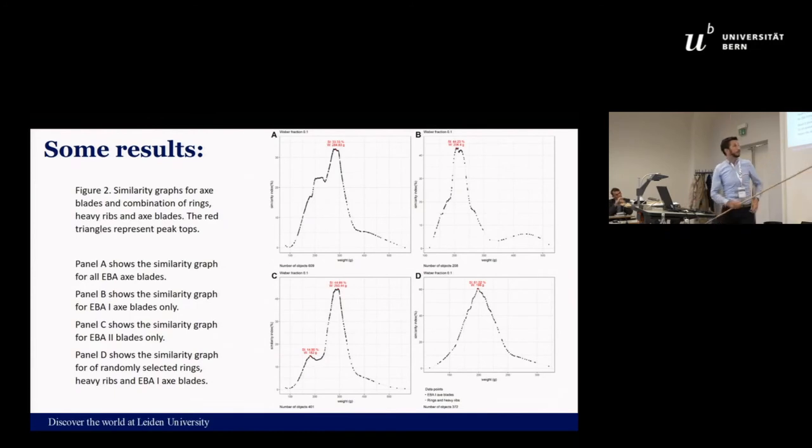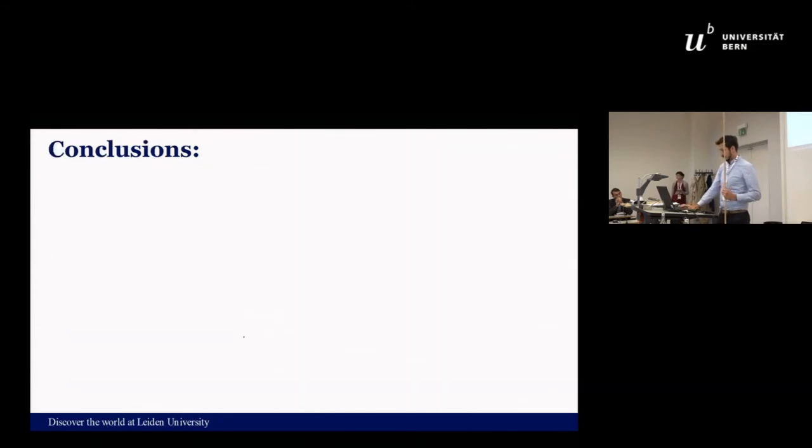We also tested them together, so we took a random amount of rings and ribs and the same amount of axes and we checked whether the statistical method would actually be able to distinguish them. And it couldn't. So if you put them together, the rings, ribs, and axes, you get this graph, which I think it's a ring that is at 198 grams and you would have 61 percent of all the other objects perceived as similar.